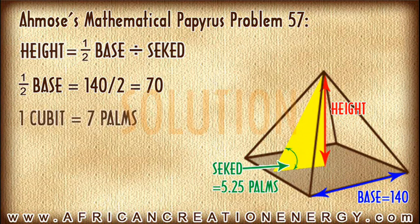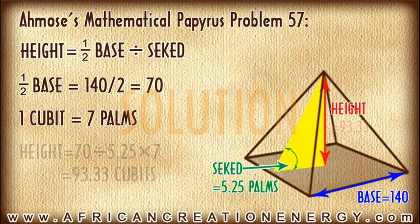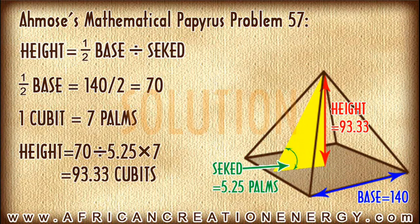Remember that 1 cubit is equal to 7 palms. Therefore, if we divide 70 — which is half the base — by our Seqed of 5.25, and multiply by 7, we get a height of 93.33 cubits.